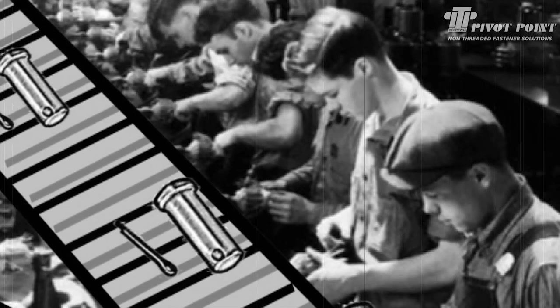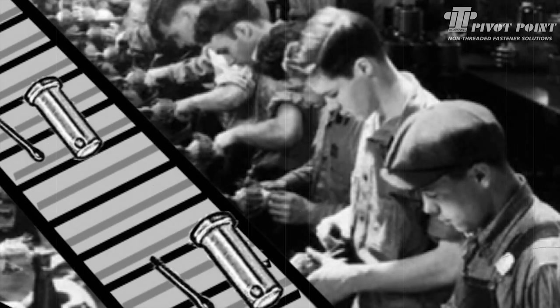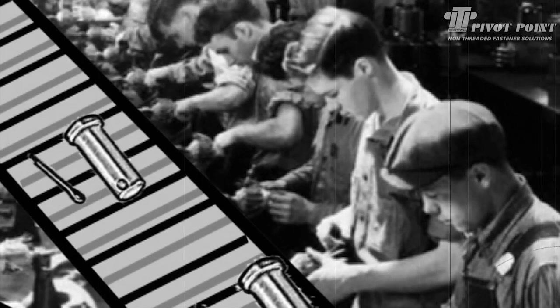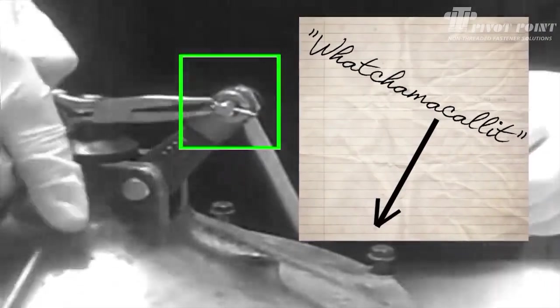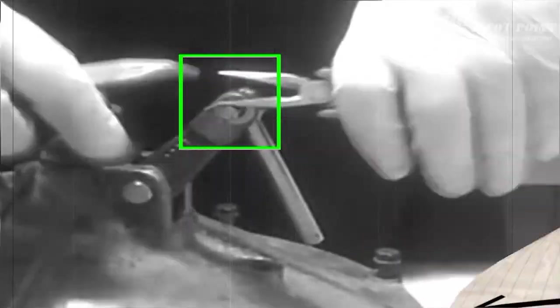Our story begins with a disgruntled group of assemblers. Day after day, the line fed them the old clevis pin and cotter pin combo, which made their assembly of whatchamacallits a series of frustrating missteps.